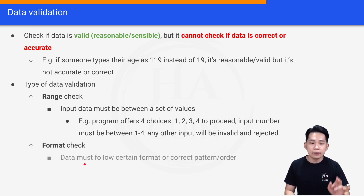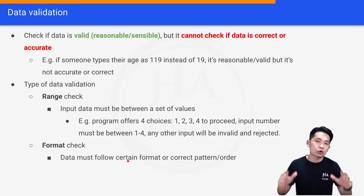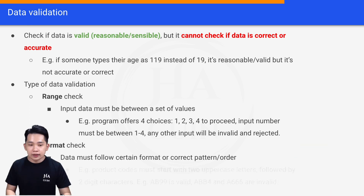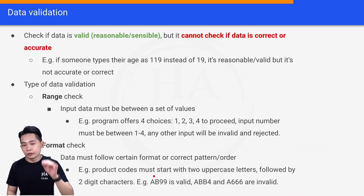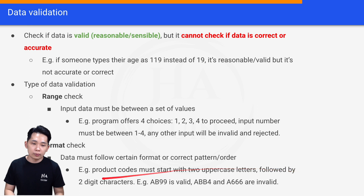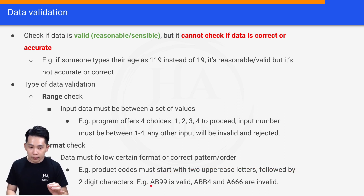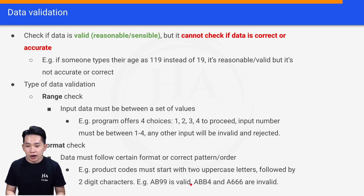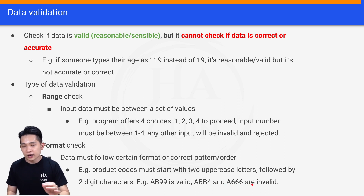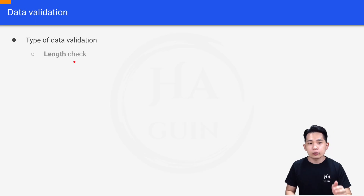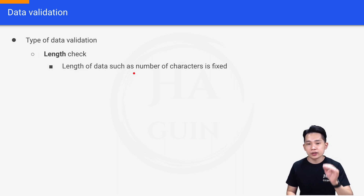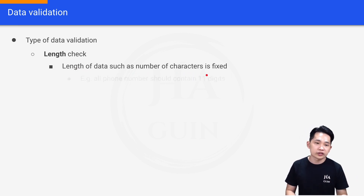Next is format check, which means data must follow a certain format, correct pattern, or order. For example, product codes must start with two uppercase letters followed by two digit characters. So AB99 is valid — two uppercase characters AB and then two digit characters 99 — but ABB4 and A666 are invalid.